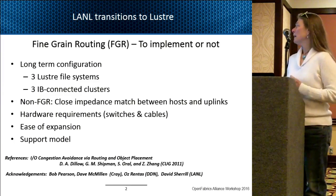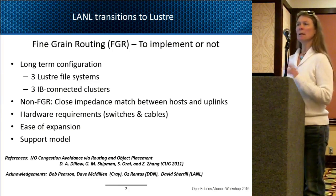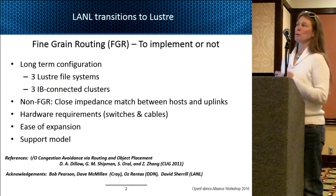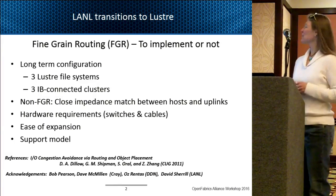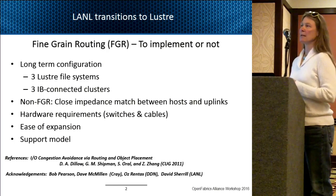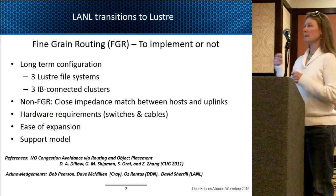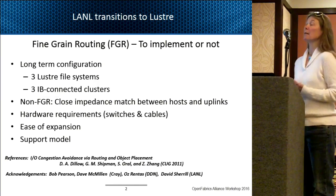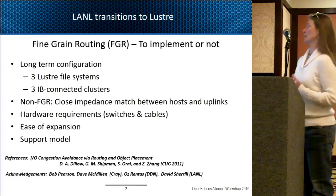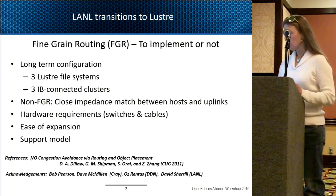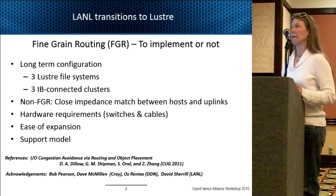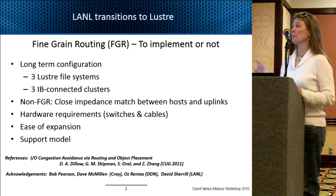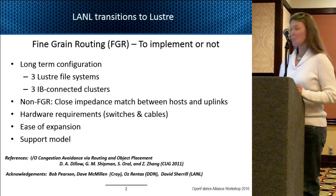Hardware requirements also drove the decision: how many switches and cables to support a storage backbone, ease of expansion, and the support model. That was related to the fact that we bought a DDN packaged solution, paid for DDN support, put it on the floor, and then promptly started tearing it apart making fundamental changes — DDN was not too happy about that. To show how new fine-grained routing was, the first literature I could find was a LUG presentation from 2011. Dave Dillow at Oak Ridge was involved, and Oak Ridge is further ahead on the curve in this area, but it was still fairly new.